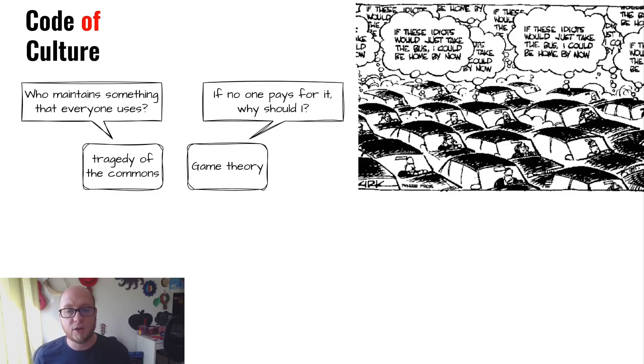Game theory, on the other hand, explores how individuals and groups make decisions when faced with strategic choices. In the context of open source, this means that companies may prioritize short-term gains over long-term benefits to the community because they don't want to be the only ones to pay for the people that they don't want to pay. It's important to recognize these dynamics and work towards a solution that balances the interests of both the capitalist and the open source modes of production, in order to create a more sustainable and equitable future for technology.